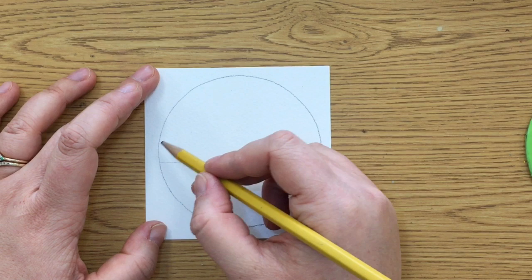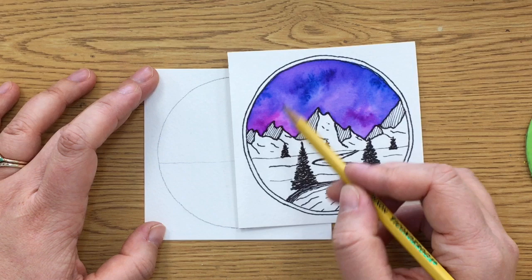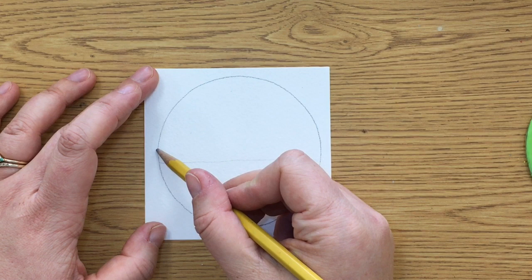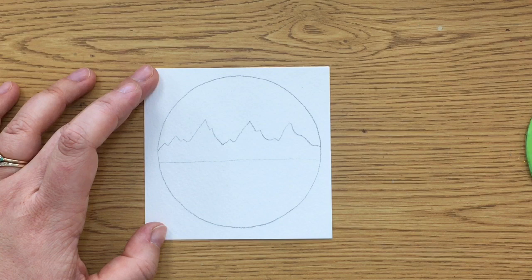The next little line we're going to make is the line for the mountains, and you want to be able to see different peaks of the mountain. So don't just do like triangles up and down. You want them to look a little more natural, a little more organic. So some can be tall, some can be short. And you want it to go all the way across to the other side.